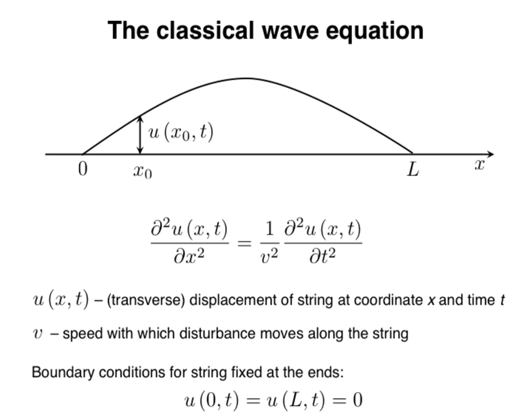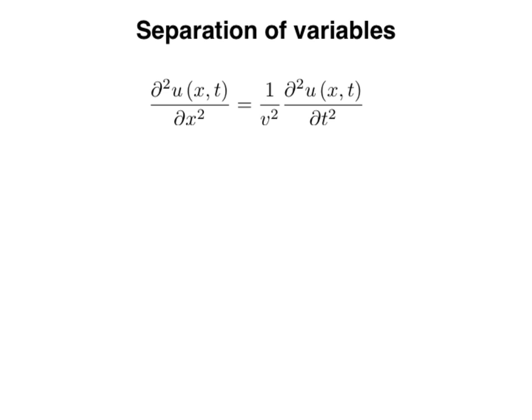The wave equation is a partial differential equation. It can be solved by a technique known as separation of variables. In this technique, we represent the function of two variables u(x, t) as the product of two functions: capital X, which is only a function of x, and capital T, which is only a function of t. Writing u as such a product is referred to as factorizing u(x, t), and the product representation is called its factorization.